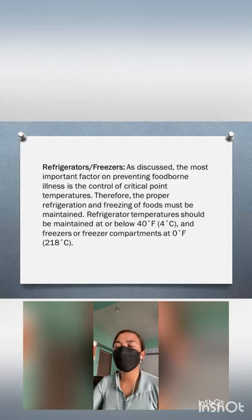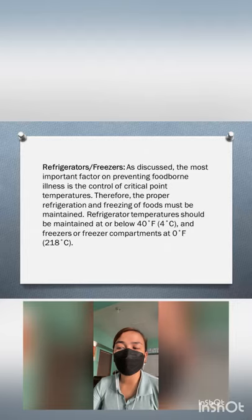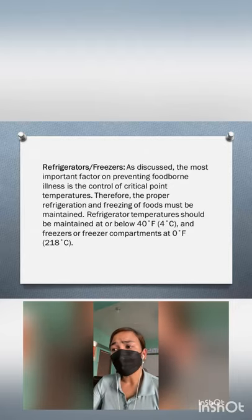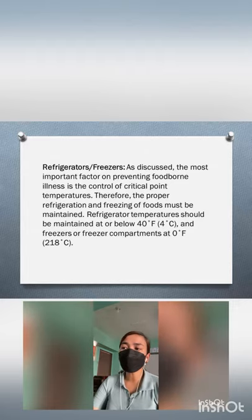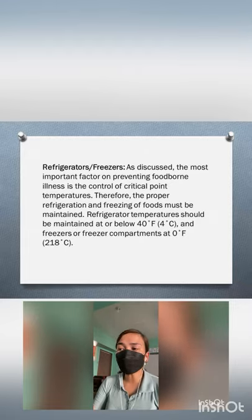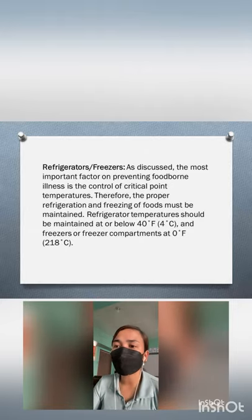Next, we have the refrigerators or freezers. The most important factor in preventing foodborne illness is the control of critical point temperatures. Proper refrigeration and freezing of foods must be maintained. Refrigerator temperatures should be maintained at or below 40 degrees Fahrenheit (4 degrees Celsius), and freezers at 0 degrees Fahrenheit (negative 18 degrees Celsius).